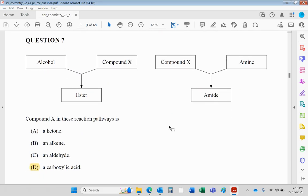Question seven: compound X has to be a carboxylic acid if it reacts with an alcohol to form an ester, and that same compound X would form an amide from an amine. Carboxylic acid.